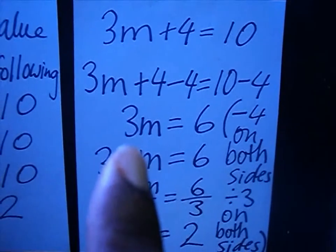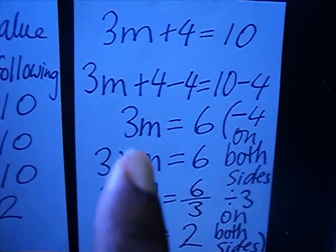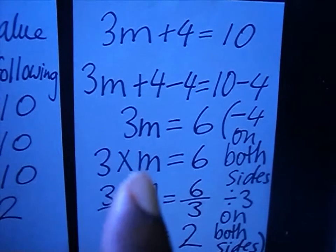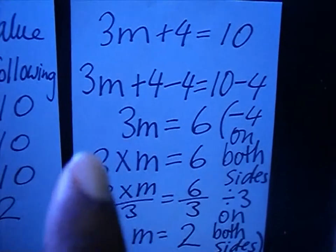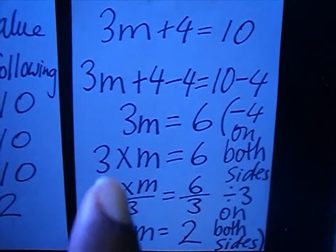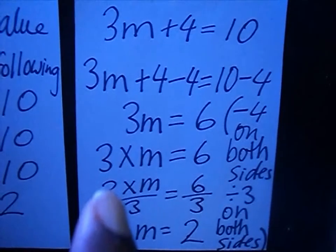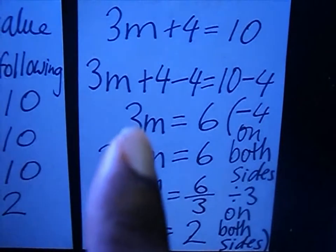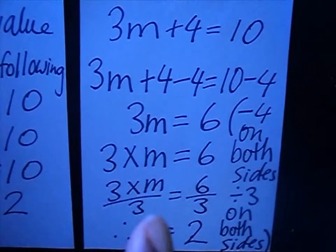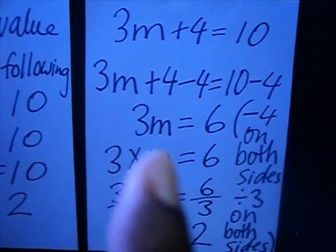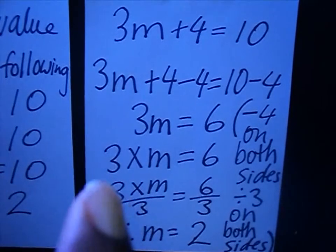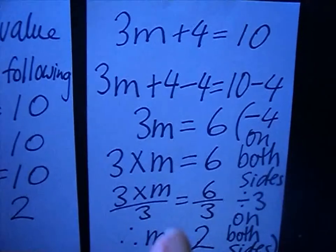Now I want to get rid of the three. What should I do? I'm going to do the opposite of multiplication, which is division. So 3m is the same as 3 times m. You divide by 3 on both sides — the opposite of multiplication is division. So you have 3 times m over 3 equals to 6 divided by 3. The 3s cancel out, so m equals to 2.